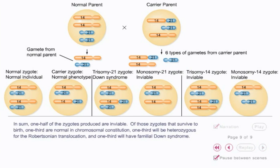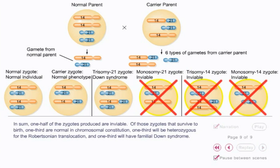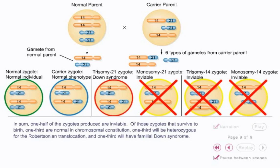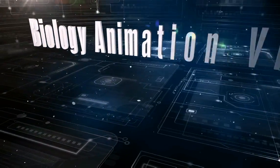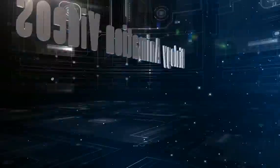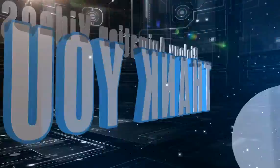In sum, one-half of the zygotes produced are inviable. Of those zygotes that survive to birth, one-third are normal in chromosomal constitution, one-third will be heterozygous for the Robertsonian translocation, and one-third will have familial Down syndrome.